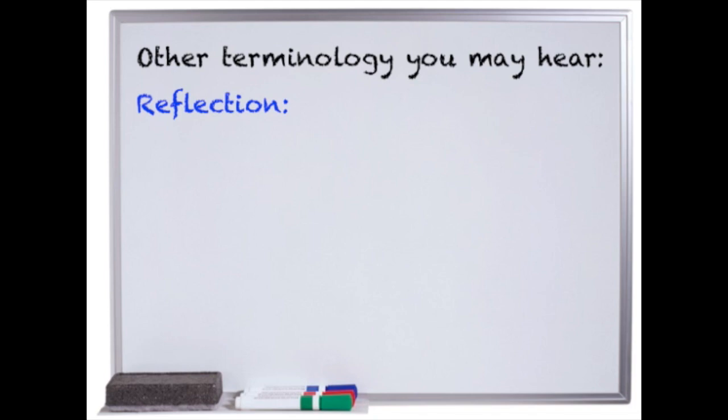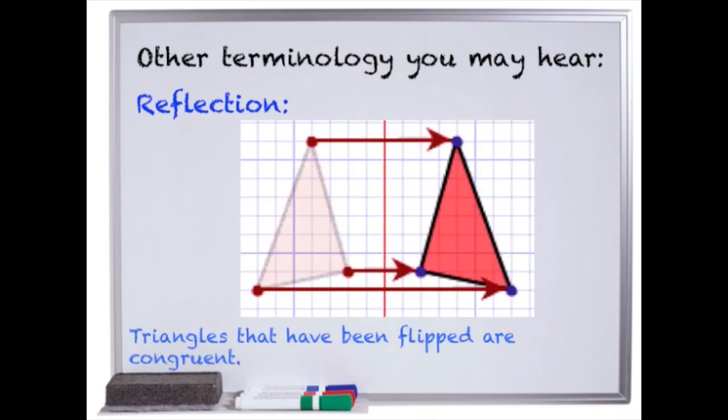Reflection is where something is mirrored, like when you look in the mirror and you see yourself opposite to what you actually are. A triangle can be flipped over or shown as a mirror image and it's still exactly the same shape.